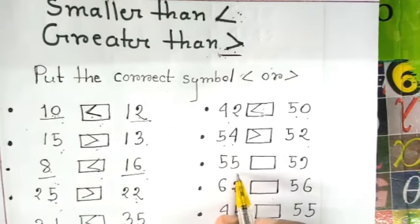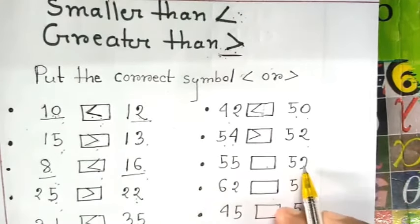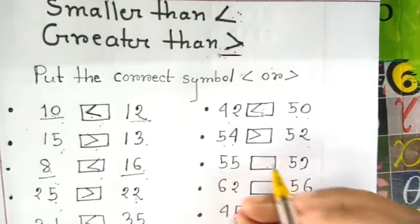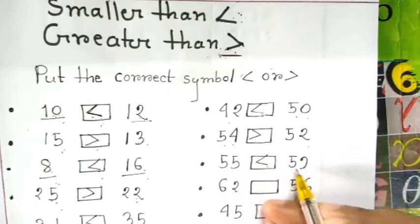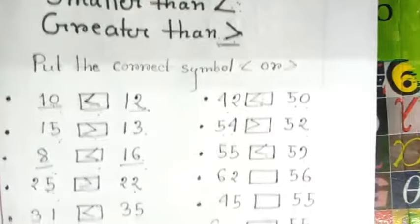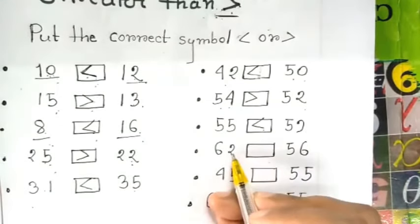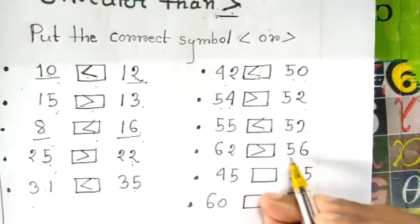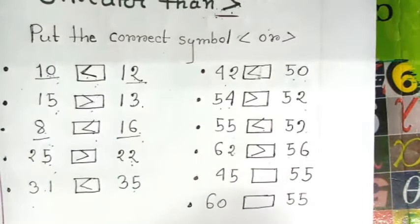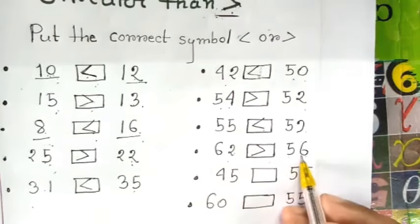55 dash 59. Now 55 is smaller than 59. 62 is greater than 56. 62 is greater than 56.